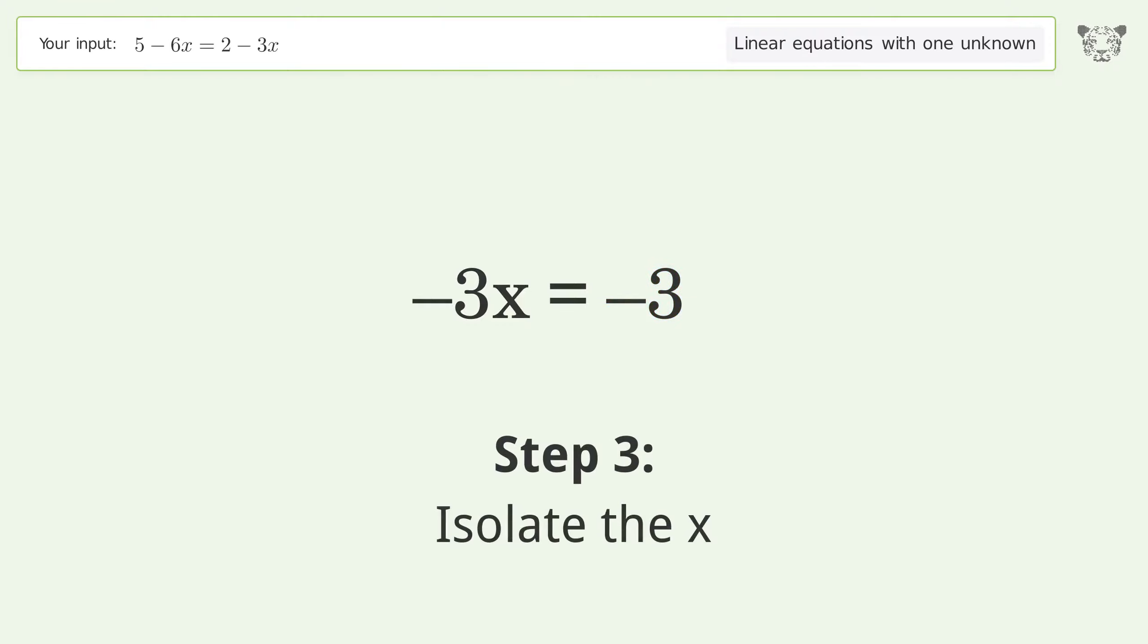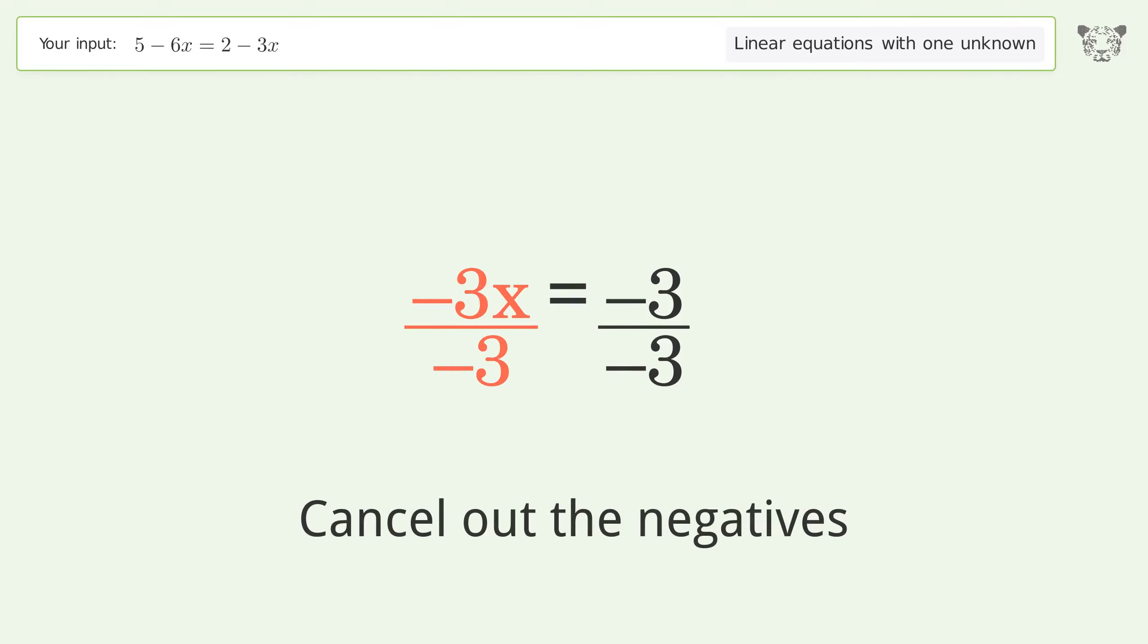Isolate the x. Divide both sides by negative 3, cancel out the negatives, and simplify the fraction.